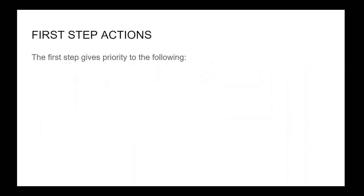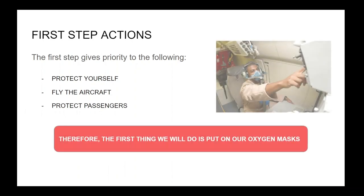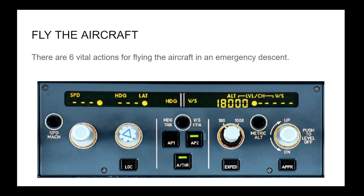The first step memory items give priority to the following: protect yourself, fly the aircraft, protect the passengers. Therefore, the first thing we do is put on our oxygen masks. In the memory items, as PF, your priority after protecting yourself is to fly the aircraft. The memory items for an emergency descent are focused on the FCU, as the automatics are still engaged. Working from right to left, your actions are: turn-pull, turn, pull, pull.